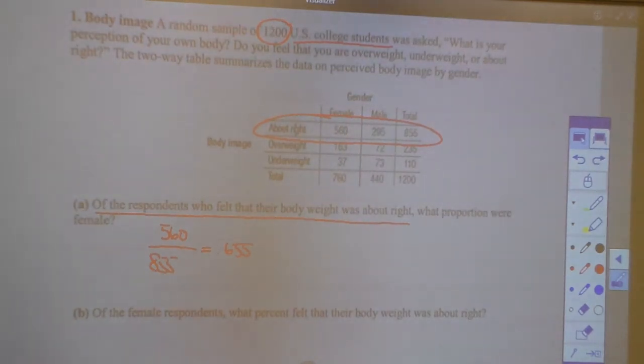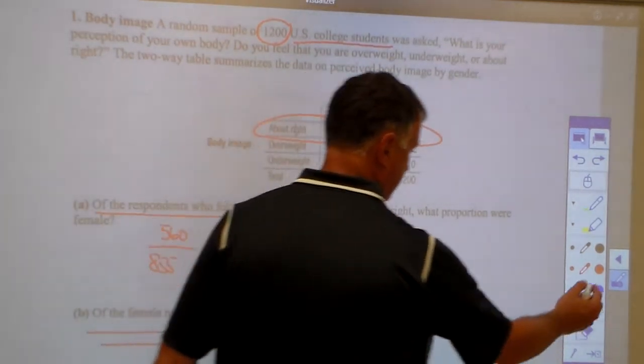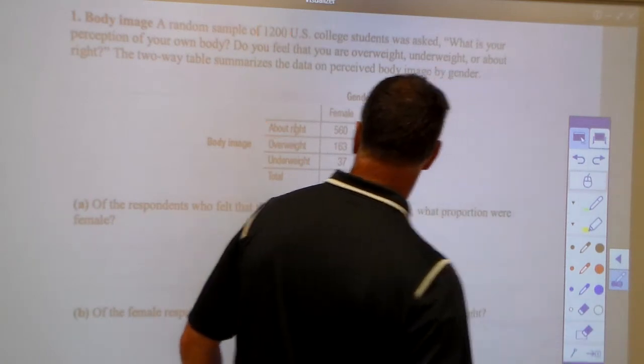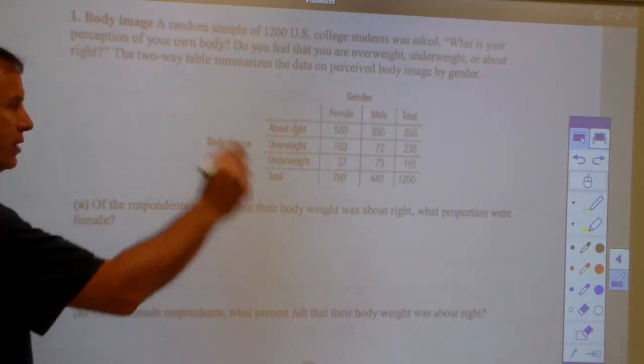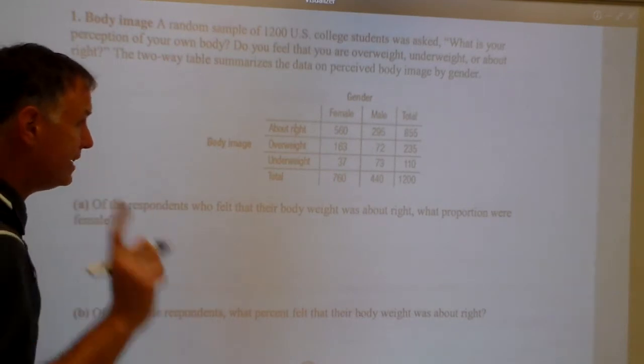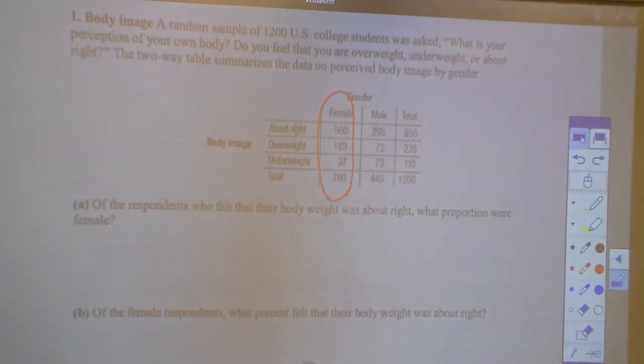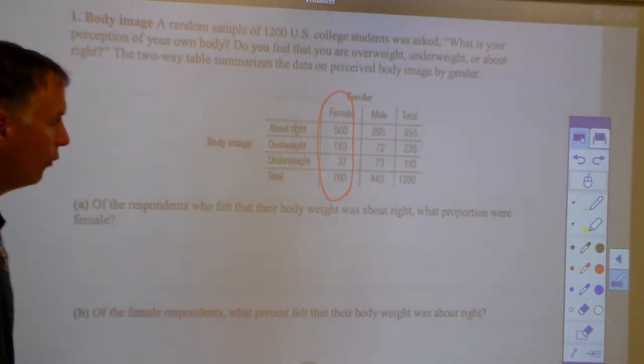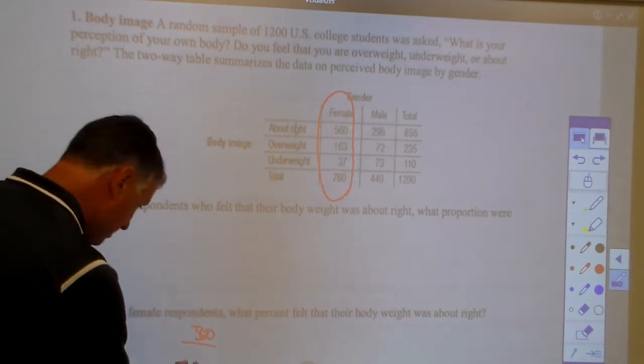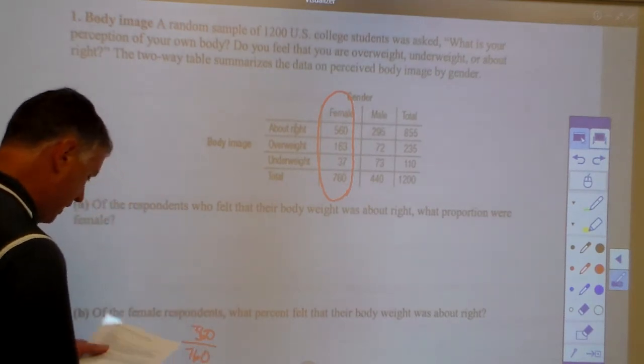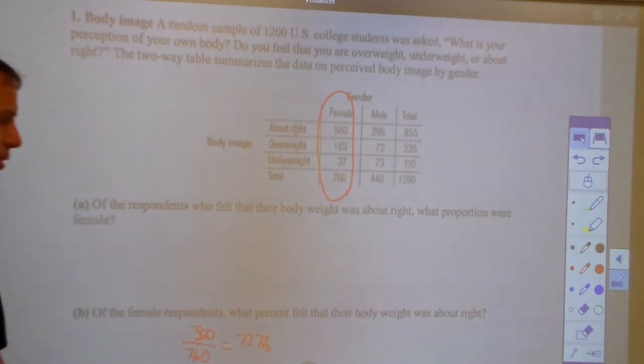Of the female respondents, okay, of the females, we're just talking about the ladies here, just the females. So let me get rid of some of these markings. Where do you find the females? This is another conditional probability we're going to talk about in a minute. Conditional probabilities look at either rows or at columns. So a conditional probability, just females. I'm looking at just the females. They want to know how are the females broken up, what percent felt they were about right. So about right is 560 divided by the total number of females, which is 760, and that percentage is 73.7.